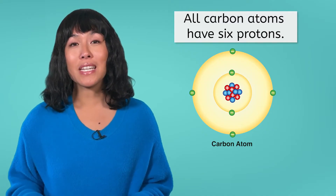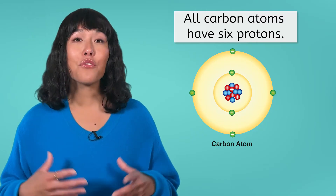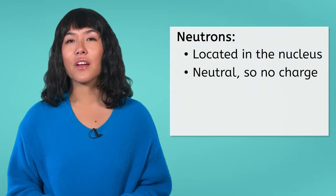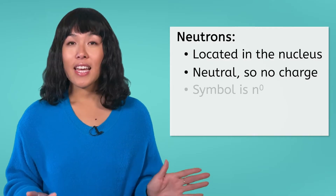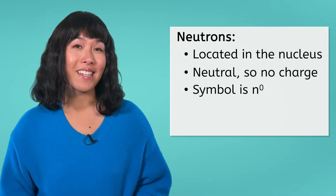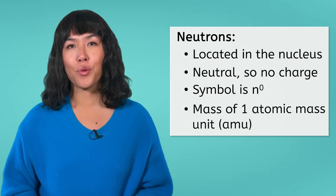It must be a different element. In fact, every element has a different number of protons. The proton is not the only subatomic particle located in the nucleus — it has a roommate: the neutron. A neutron does not have a charge and is therefore neutral. Its symbol is a lowercase n with a little zero on the top right, and like the proton, it has a mass of one atomic mass unit.